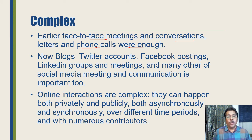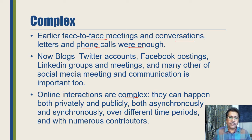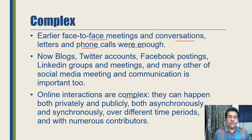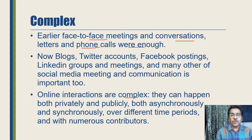Online interactions are very complex because they happen both privately and publicly — some in public space, some in encrypted or restricted groups. They also take place synchronously, such as video meetings where people interact in real time, and asynchronously, like emails where one person communicates and another responds at a very different time. There may also be numerous contributors, not just two people, which makes ethnographic study in the digital space quite challenging.